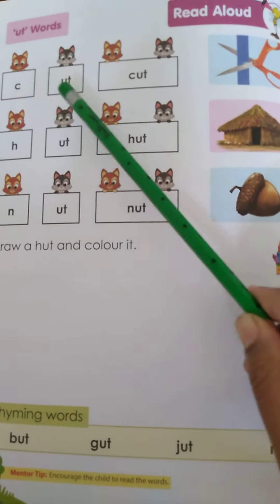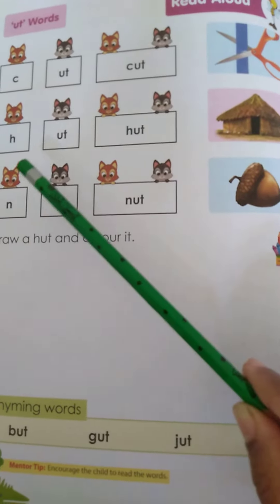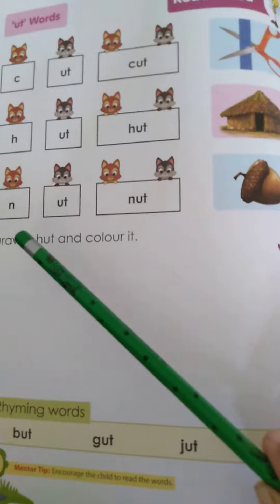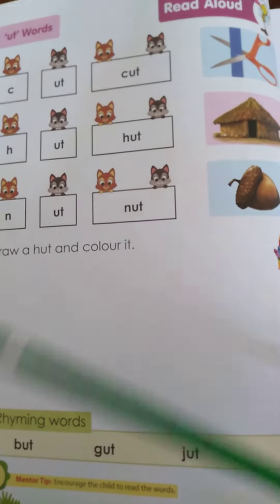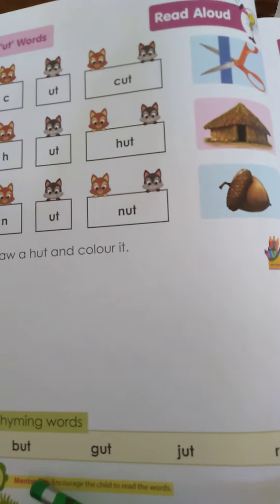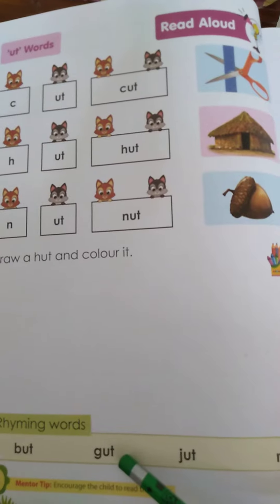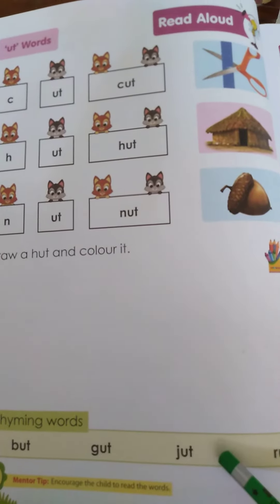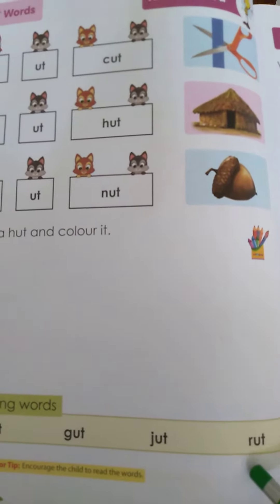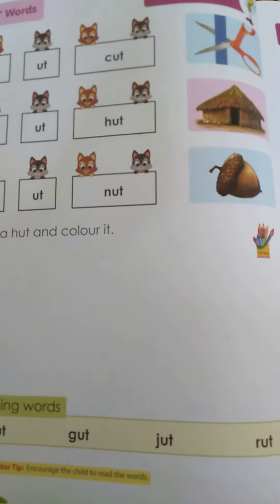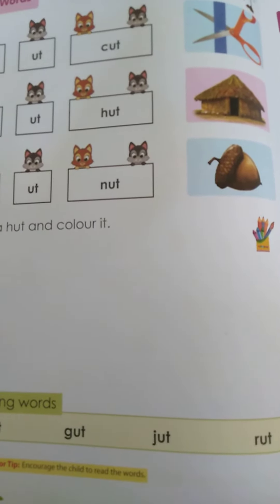K-ut: cut. H-ut: hut. N-ut: nut. B-ut: butt. G-ut: gut. J-ut: jut. And R-ut: rut. Now let's go to page 26.